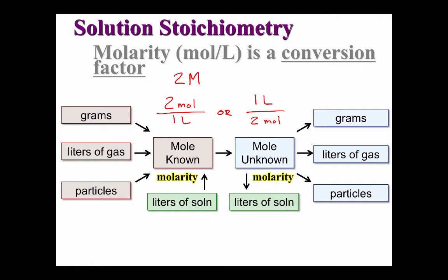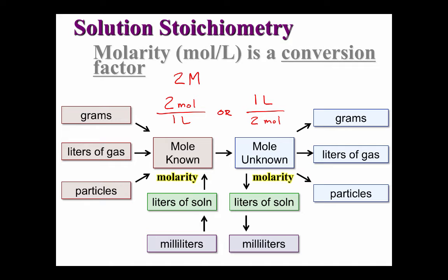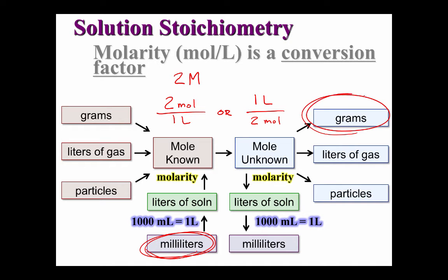Many times, we won't measure solutions in liters, but in a smaller, more convenient volume called a milliliter. We have a conversion factor to go from milliliters to liters as well. So if we're given the milliliters of a known solution and asked to calculate the grams of an unknown substance in a chemical reaction, we will convert from milliliters to liters, then from liters to moles using the molarity, then from moles of known to moles of unknown, and finally to grams.